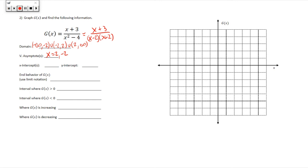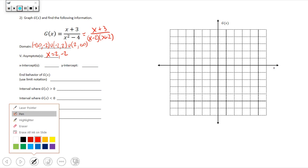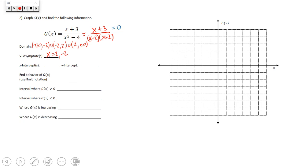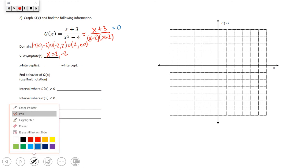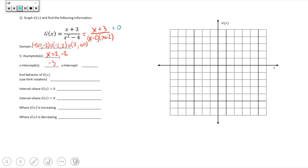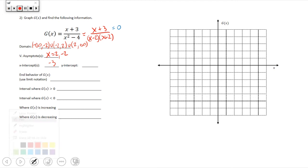The x-intercepts occur when y equals zero, so we set the numerator equal to zero. That gives us an x-intercept at x equals negative 3. The y-intercept happens when we plug in zero for x: (0 + 3) divided by (0 minus 4) equals negative three-fourths. So there's a y-intercept at negative three-fourths.